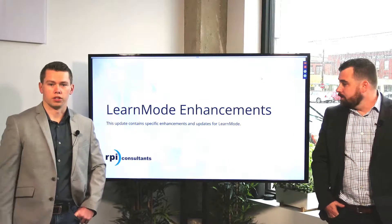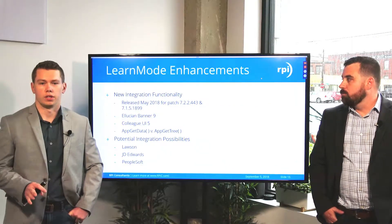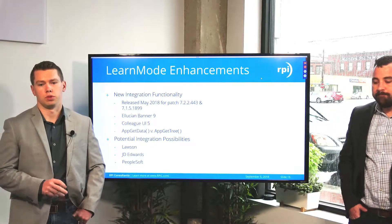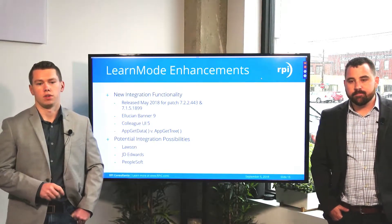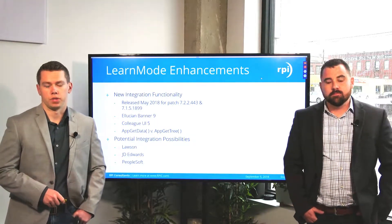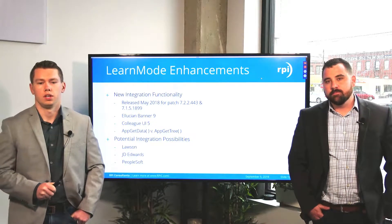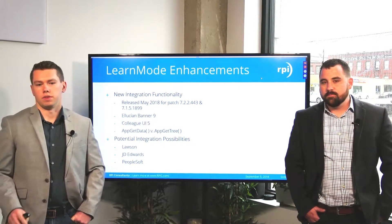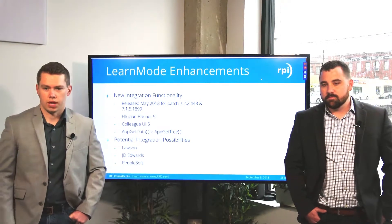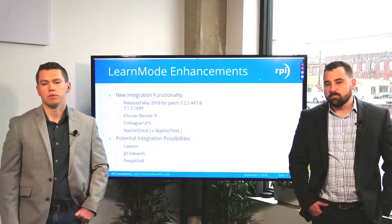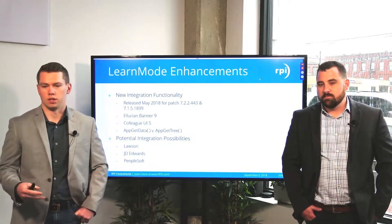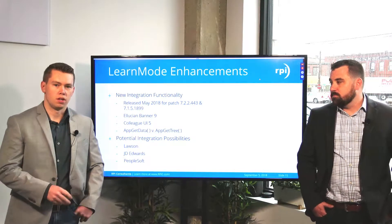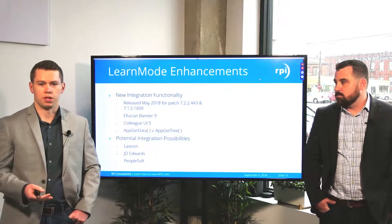Next, we'll cover the learn mode enhancements. This new integration functionality was released in May 2018 for patches specifically 7.2.2443 and 7151899. Within the release notes, this talks specifically about integration with Ellucian Banner 9 and Colleague UI 5, utilizing the methods app get data and app get tree. App get tree is the new method being utilized. Previously you had to make multiple calls for all the data in a web page, and with shifting values this could cause slowness. With the app get tree method, you can now pull all that data in one single call, definitely speeding up your process.